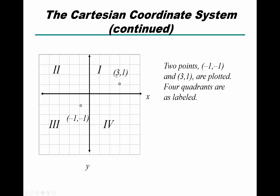In the first quadrant, both the x and y coordinates are positive. Conversely, in the third quadrant, both x and y are negative. The second and fourth quadrants have opposite signs: in the second quadrant, x is negative and y is positive; in the fourth, x is positive and y is negative.